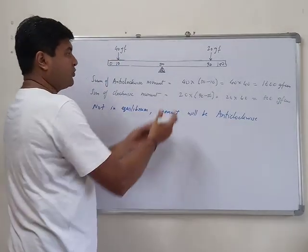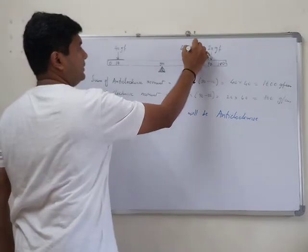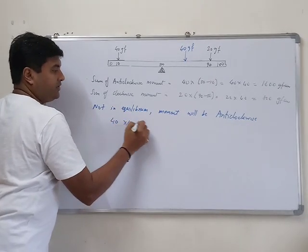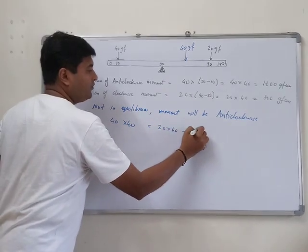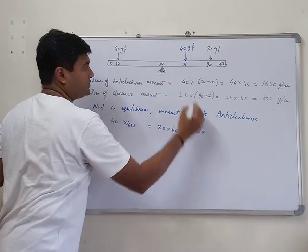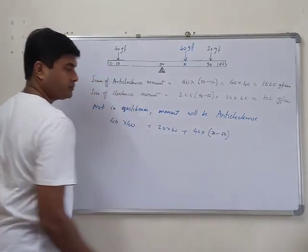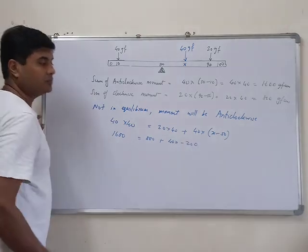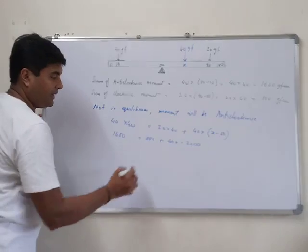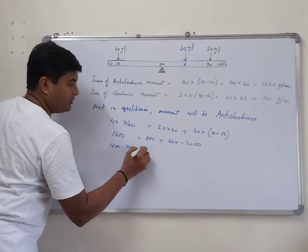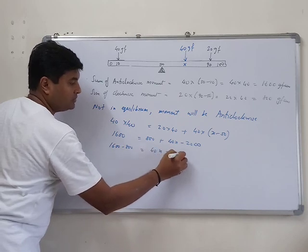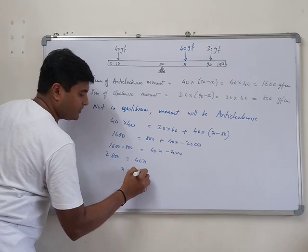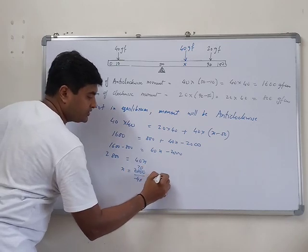Since the clockwise side is weaker, place 40 gf on the clockwise side at position x. Equating moments: 40 into 40 = 20 into 40 + 40 into (x − 50), so 1600 = 800 + 40x − 2000. Solving: 1600 − 800 + 2000 = 40x, giving 2800 = 40x, so x = 70. The 40 gf weight must be placed at the 70 centimeter mark.